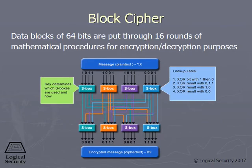DES is a block cipher. It's a symmetric algorithm, so it cuts messages up into blocks, and those block sizes are 64 bits. Remember that with a block cipher, the message is cut up into individual blocks, and if it's using DES, those blocks are going to be 64 bits.